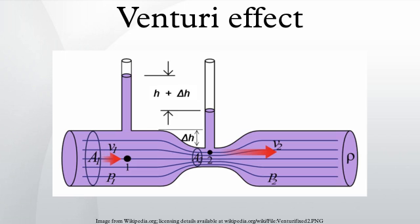The Venturi effect is a jet effect. As with a funnel, the velocity of the fluid increases as the cross-sectional area decreases, with the static pressure correspondingly decreasing. According to the laws governing fluid dynamics, a fluid's velocity must increase as it passes through a constriction to satisfy the principle of continuity, while its pressure must decrease to satisfy the principle of conservation of mechanical energy. Thus any gain in kinetic energy a fluid may accrue due to its increased velocity through a constriction is negated by a drop in pressure.